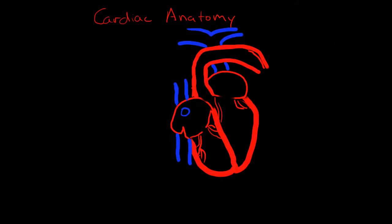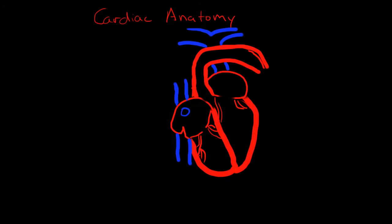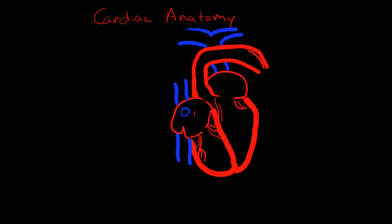This is Andrew Wolff and in this video I'm going to give a very brief introduction and overview of cardiac anatomy. You can see here a little cutaway sagittal view of the heart. The heart has four chambers: two atria — the right atrium and the left atrium — and then the right ventricle and the left ventricle.